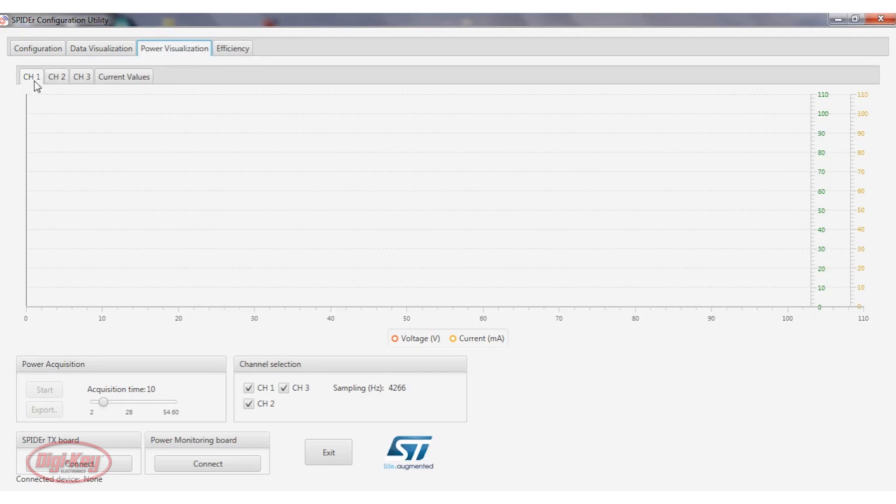Channel 1 is the voltage and current profile of the solar panels, and they are plotted as a function of time. Channel 2 is for the voltage and current profiles of the battery, which are again plotted as a function of time. And channel 3 is the output voltage and current profiles of the ambient light sensor. So I'm going to come down here. I'm going to connect. And it's connected, and I'll hit start.